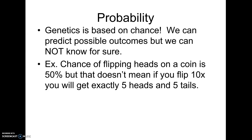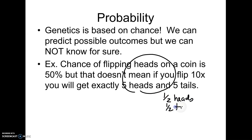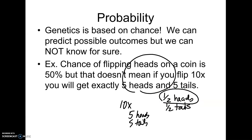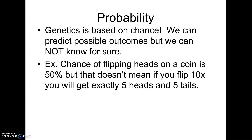Before we get started, keep in mind that genetics is based on chance or probability. So if you make a prediction — for example, if you flip a coin, there's a one-half chance of heads and a one-half chance of tails — that does not mean that if we flip the coin ten times, we should get exactly five heads and exactly five tails. It's just that our chances are, for each flip, a 50% chance of heads versus tails. So keep that in mind: we're not always going to get exact offspring like we predict.